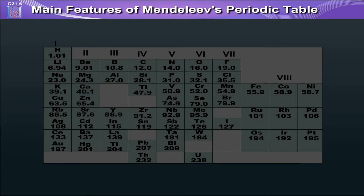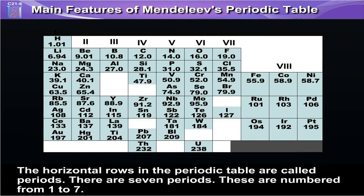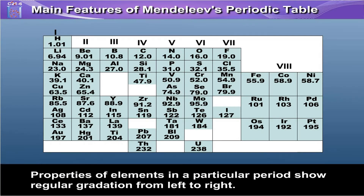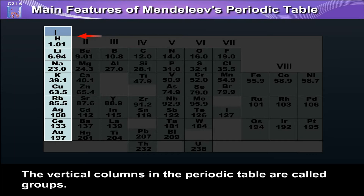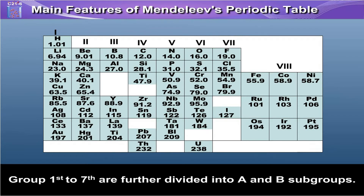Main features of Mendeleev's periodic table: The horizontal rows in the periodic table are called periods. There are eight groups numbered from 1st to 8th. Groups 1st to 7th are further divided into A and B subgroups.